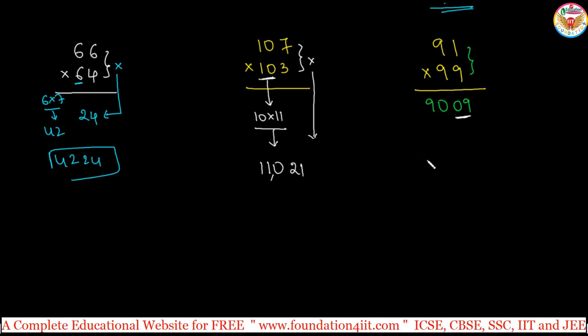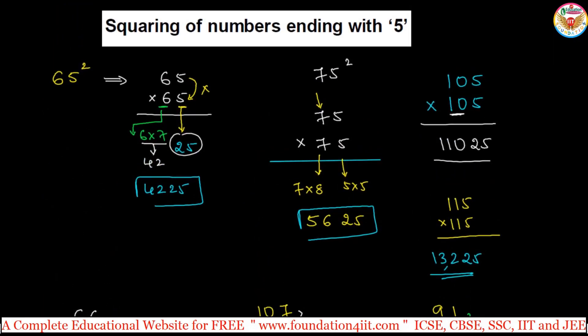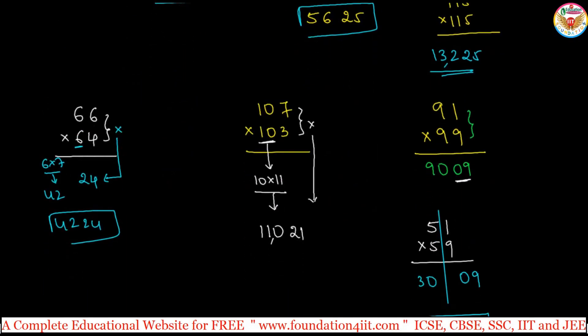Same example, if you observe like 51 times 59, I count the method: 1 times 9, 1 into 9 is 9, so you can add as 09 up to this part. Then 5 is the number, next number is 6, 5 times 6 is 30. So that is 3009 for 51 into 59. This is the concept. Just only ends with 5, that is indirectly the units place adding to 10 and tens place is same. Ends with 5 or same rule you can apply like this combination.